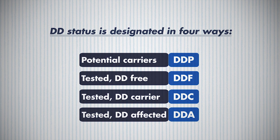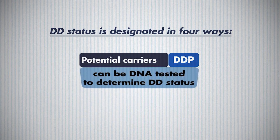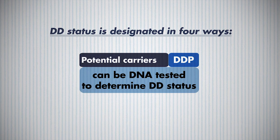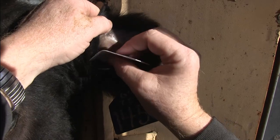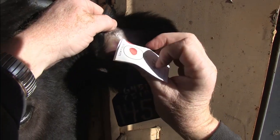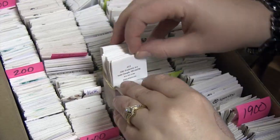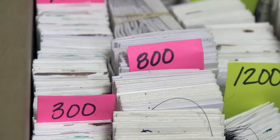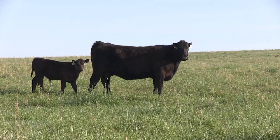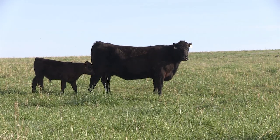Cattle identified as DDP, or potential carriers, can be DNA tested to determine their DD status. That begins with taking a hair or blood sample and submitting it to the association for evaluation. If you already have samples on file with the American Angus Association, these can be used again to determine DD status as well. Once you have DNA test results in hand, it's really pretty simple to manage around the negative impacts of DD.